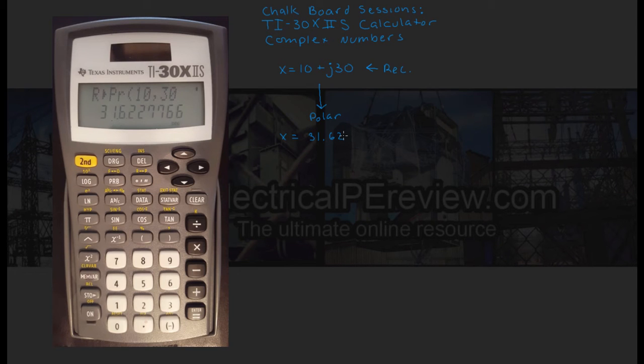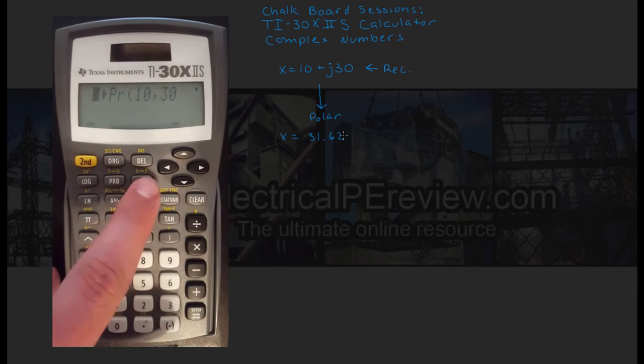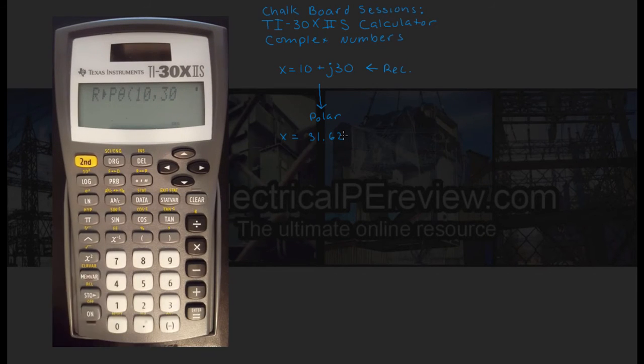Next we hit arrow up, second real to polar, and slide over to the real component to theta. Hit enter. Notice we already have our values in from last time, so we hit enter, and we've got 71.57. This is theta, our angle of our polar vector.